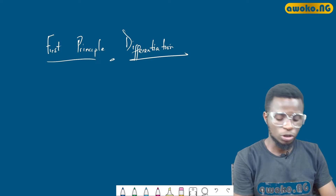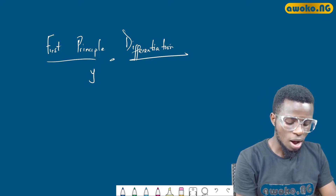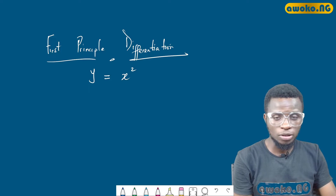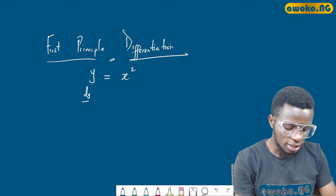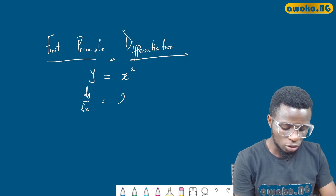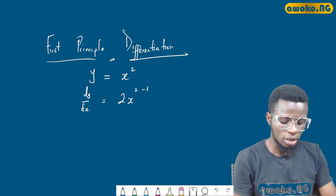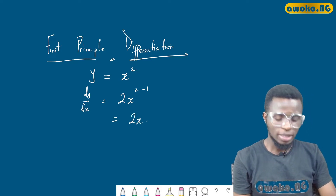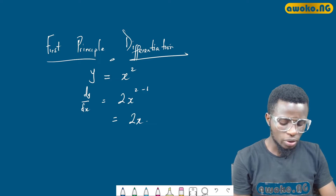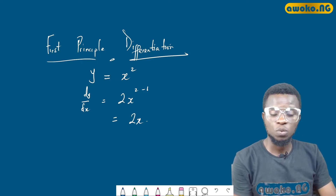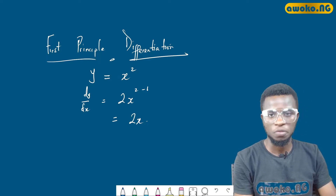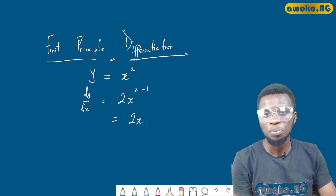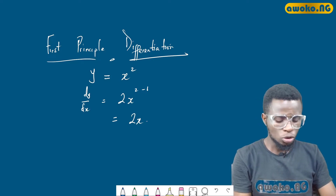Let us consider a function y = x². From the formula method we know that dy/dx is going to give us 2x² minus 1, which equals 2x. Now let us check if we still get the same answer using the first principle differentiation — they are supposed to give the same answer if computed correctly.